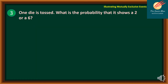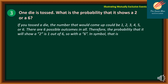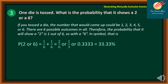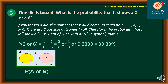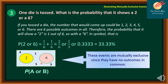Problem number 3: One die is tossed. What is the probability that it shows a 2 or a 6? When you toss a die, possible outcomes are 1, 2, 3, 4, 5, or 6 — six possible outcomes. P(2) = 1/6 and P(6) = 1/6. So P(2 or 6) = 1/6 + 1/6 = 2/6 = 1/3, which equals 0.333 or 33.33%. In the Venn diagram, 2 and 6 have no common shaded part, so the events are mutually exclusive.